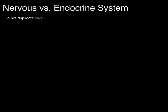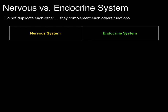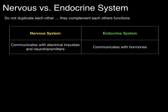The nervous system and endocrine systems do not duplicate each other — they complement each other's functions. In the left-hand column is the nervous system and the right-hand column is the endocrine system. The nervous system communicates cell to cell, or neuron to neuron, with electrical impulses and then through neurotransmitters. Whereas the endocrine system communicates cell to cell through hormones.